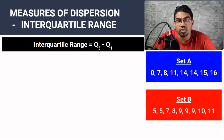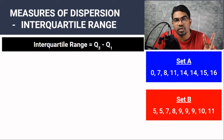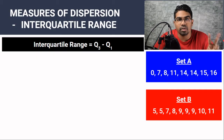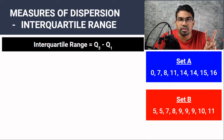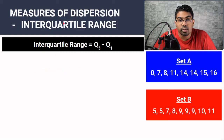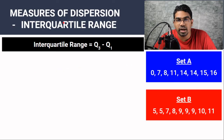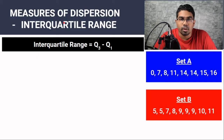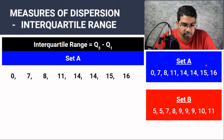Interquartile range also takes into account two values. However, interquartile range is more accurate than range. Let's find out why. Interquartile range is calculated by subtracting the first quartile from the third quartile. Now what are quartiles? Let's learn using an example.